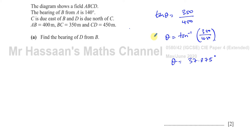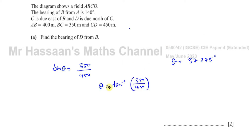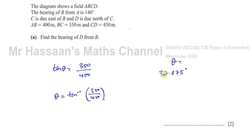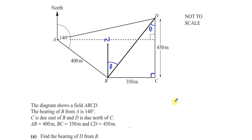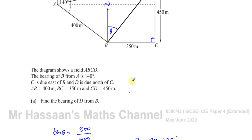Now we want to find the bearing. Bearings are always given as three-figure values and rounded to the nearest degree. So the bearing of D from B is 038 degrees. That's the answer to part A.